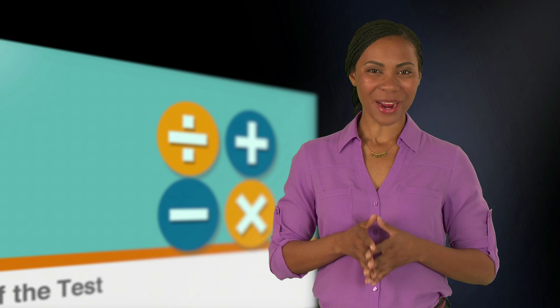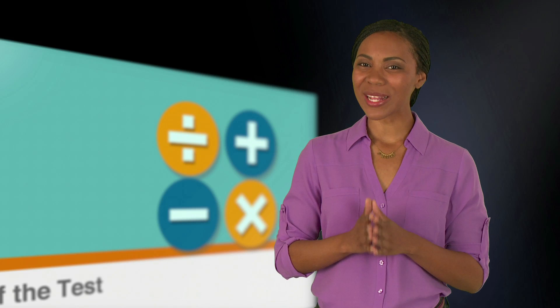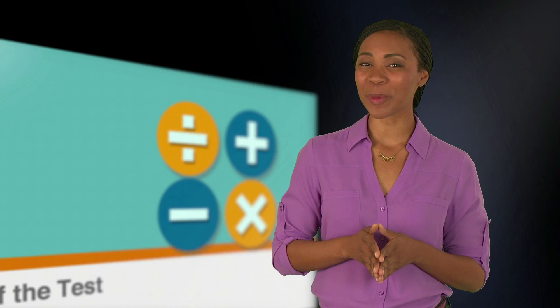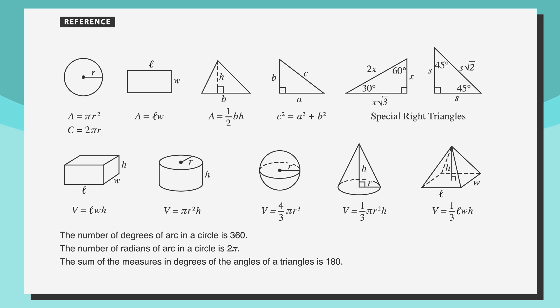Now that you get how to grid in your answers, let's talk about one area of mercy the SAT writers give you on the test, the formula box. The first thing you'll see at the beginning of every math section is a formula box, which provides some handy geometry formulas. You'll see the formulas to calculate circumference, area, volume, and special right triangles.